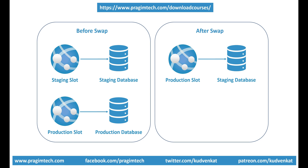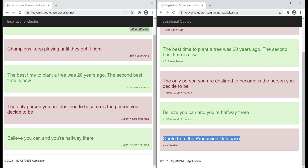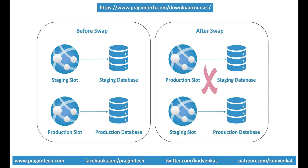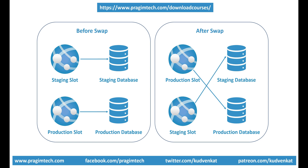This is definitely not the behavior we want. We want the production version of the app to always be pointing to the production database. Looking at the staging version on the right, we can see data from the production database, meaning our staging slot is now pointing to the production database. Upon swapping the slots, by default, along with the build, our application configuration settings — in this case the database connection string — are also swapped. This is why the production slot is now pointing to the staging database and vice versa.